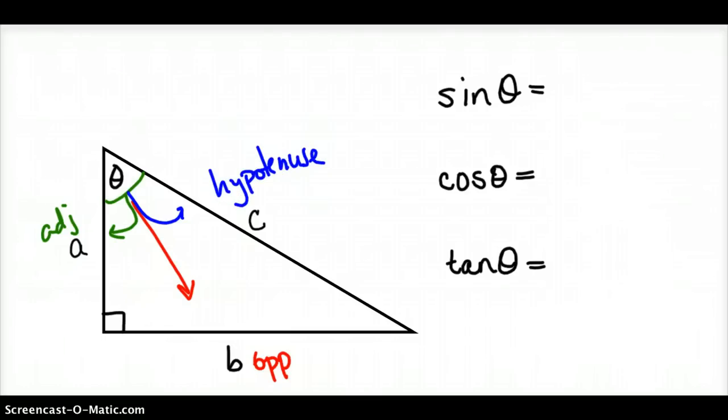And C is my hypotenuse. So if I was actually going to, instead of writing adjacent, hypotenuse, and opposite, if I was going to actually write these letters A, B, and C, in its place, what would I write? I've got sine. That's SO. So S, O, and H. My opposite side from theta, my opposite side is B.